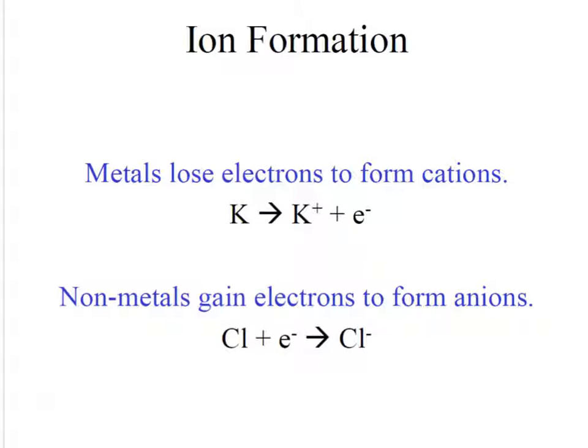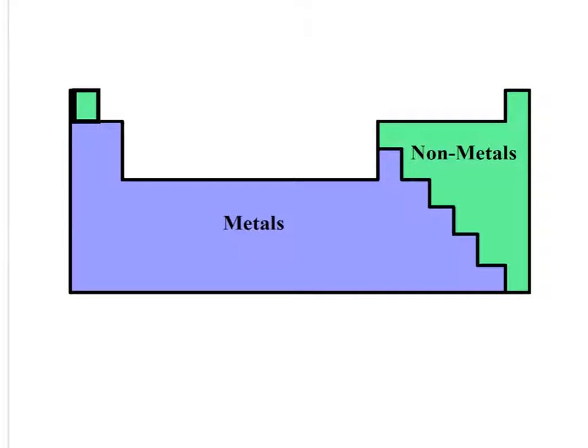Potassium loses an electron to form a positive cation. Chlorine gains an electron to form a negative ion. Metals lose electrons, so these are your cations. Non-metals gain electrons, these are your anions. Hydrogen is an exception. It could be a metal. It could gain or lose depending on what it's bonded to.